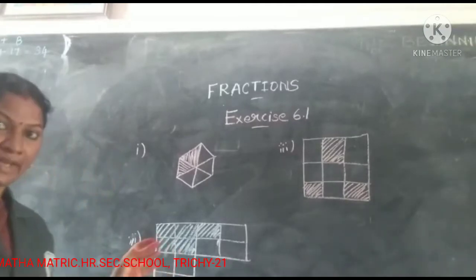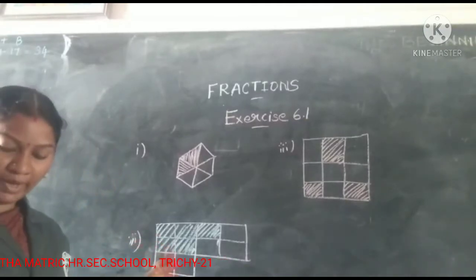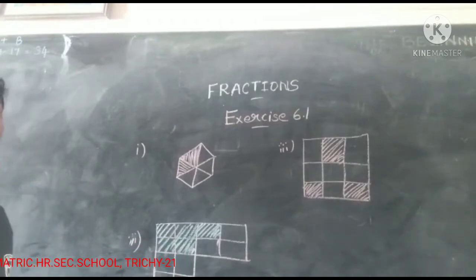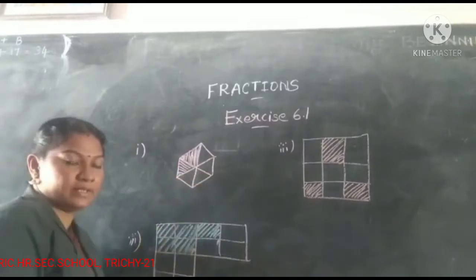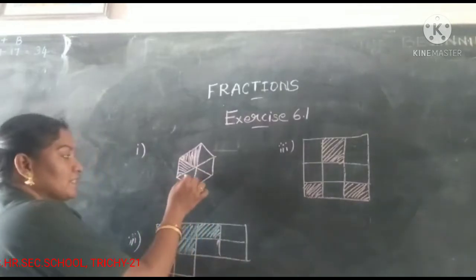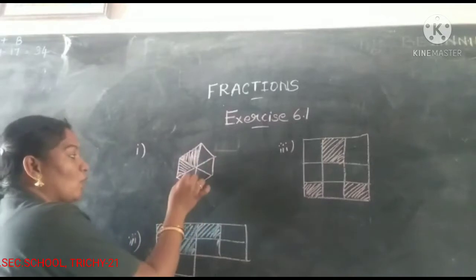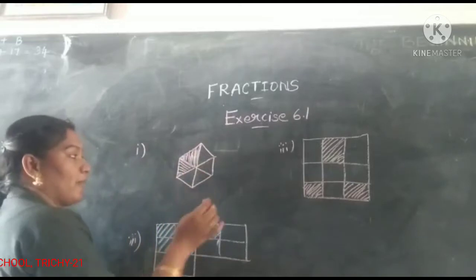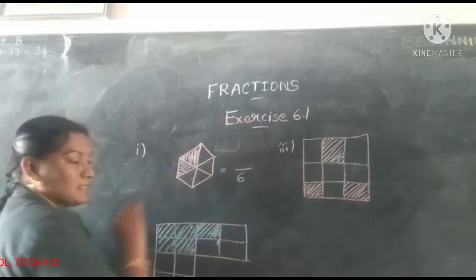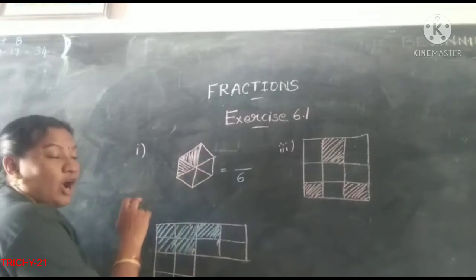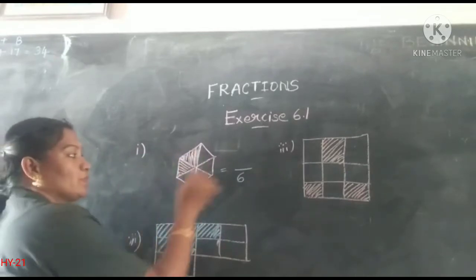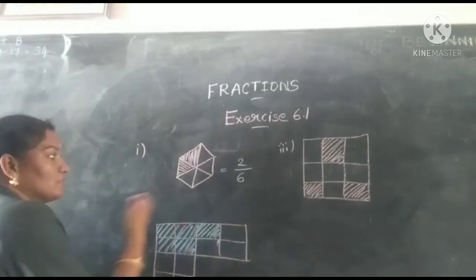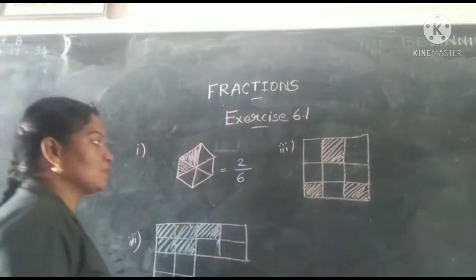Next, see the exercise. First one: write the fractions shown by the shaded part. Count how many equal parts: 1, 2, 3, 4, 5, 6 — so 6 equal parts, denominator is 6. Then count the shaded parts: 1, 2 — so 2 parts are shaded. The fraction of this figure is 2 by 6.